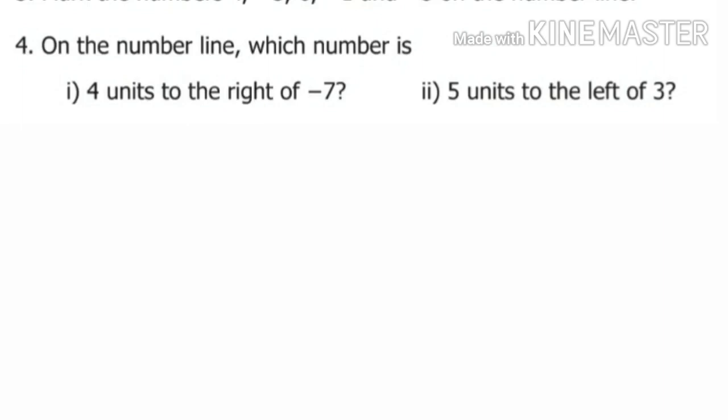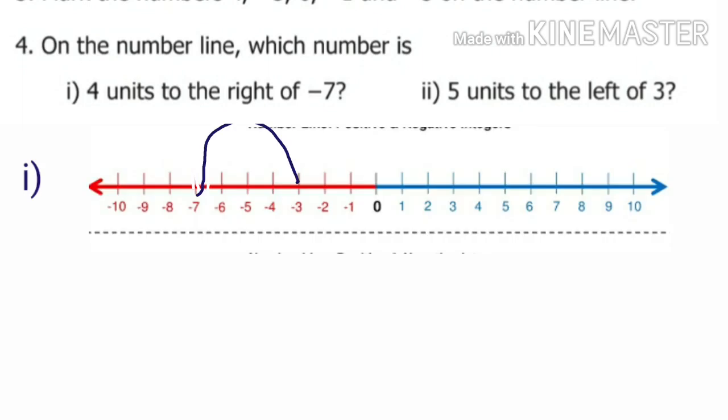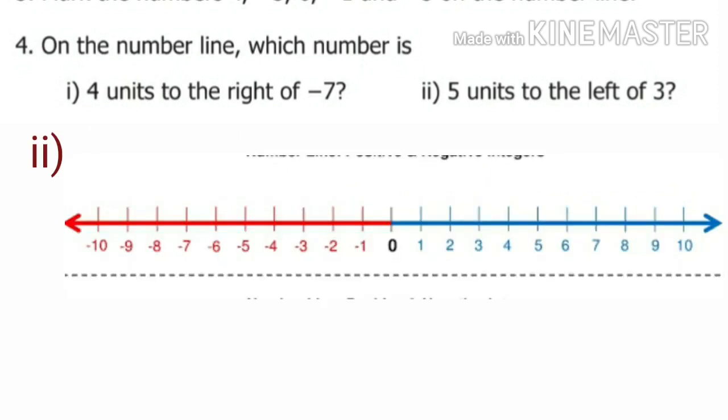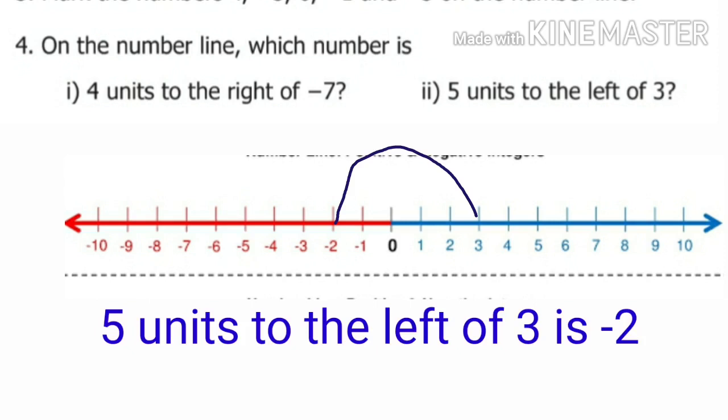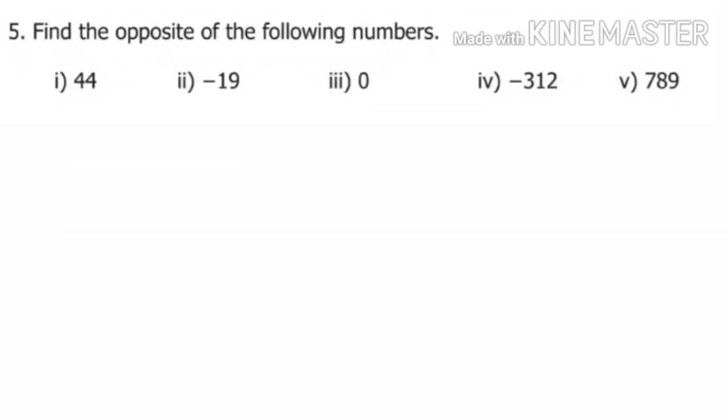Fourth sum: on the number line, which number is 4 units to the right of minus 7? From minus 7: minus 6, minus 5, minus 4, minus 3. So 4 units to the right of minus 7 is minus 3. Second one: 5 units to the left of 3. From 3: 2, 1, 0, minus 1, minus 2. So 5 units to the left of 3 is minus 2.